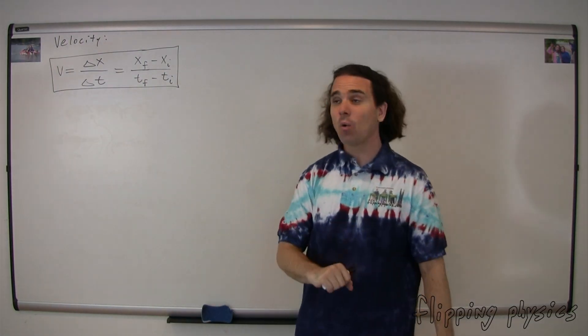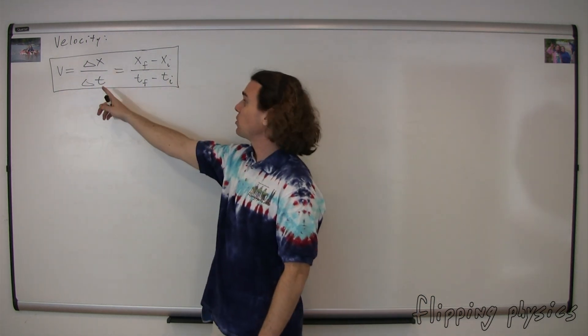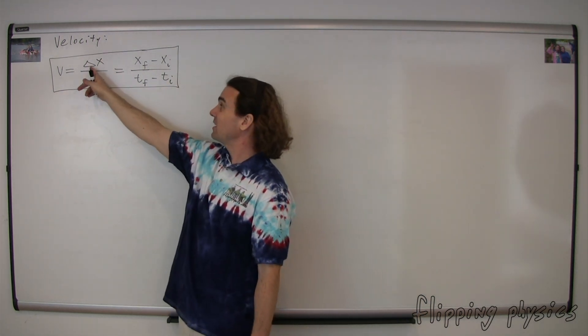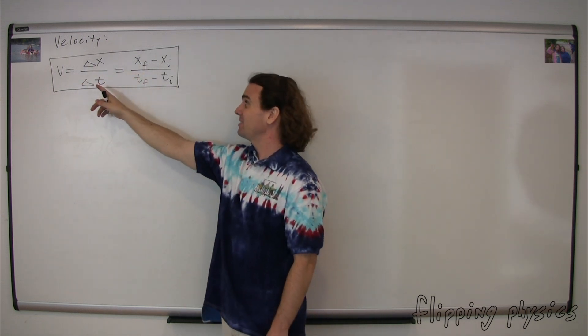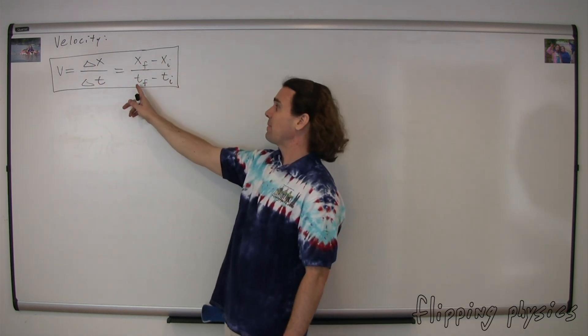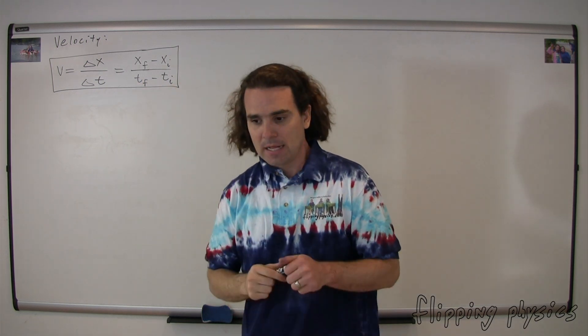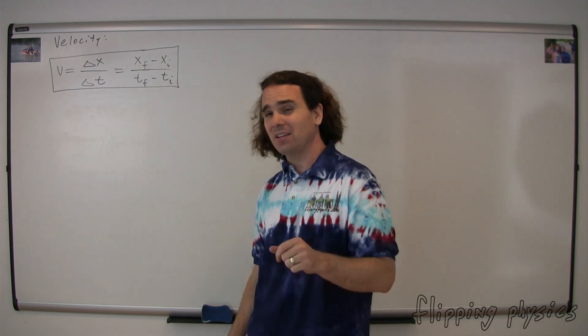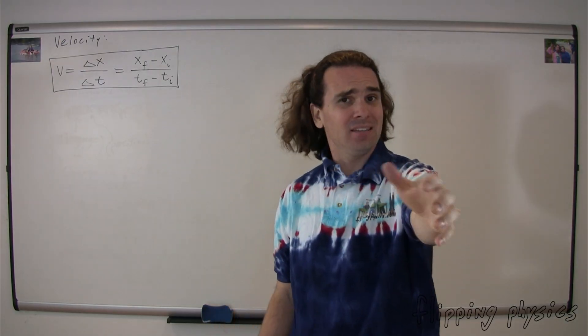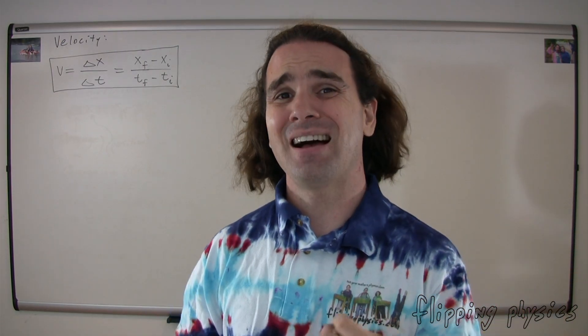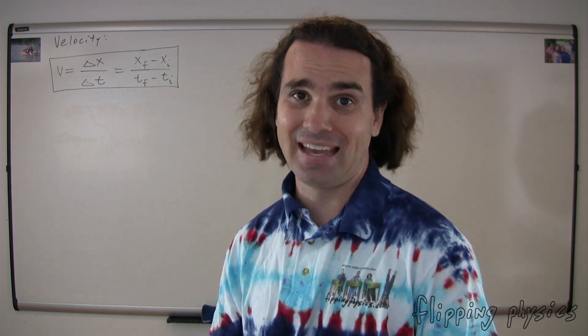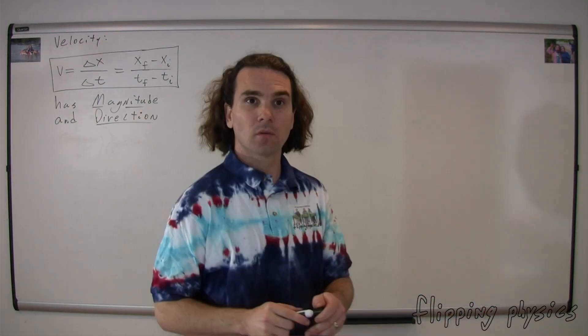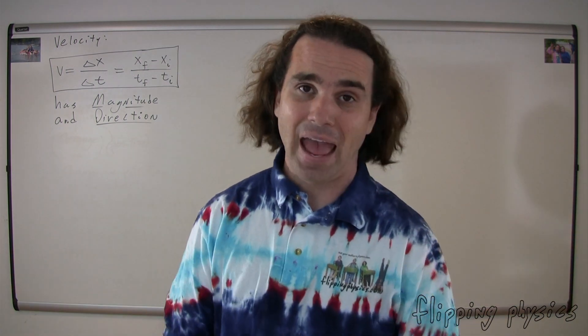Yes. So the complete equation then is velocity equals the change in position over the change in time. Delta means change in. Therefore, velocity is equal to the position final minus the position initial divided by the quantity time final minus time initial. Remind me, class, what two things does displacement have that we need to remember? Direction and magnitude. That's right. Displacement has both magnitude and direction, and distance has magnitude only and no direction. This means that because velocity is in terms of displacement, velocity is also going to have both magnitude and direction. Again, velocity has both magnitude and direction. Very important.